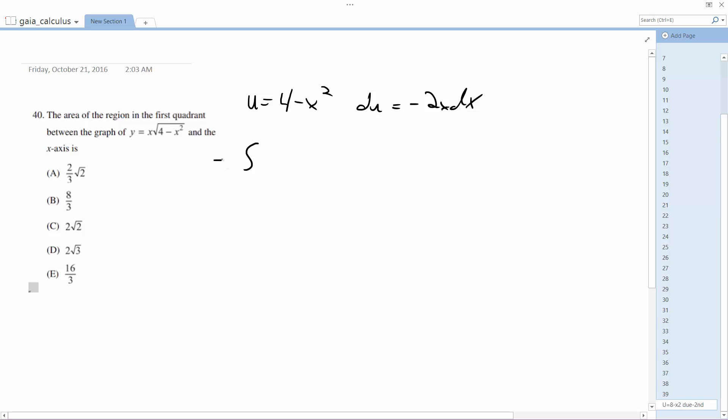Alright, so subbing, so negative 1 half from 4 to 0, square root of u, du. Actually, what am I doing? Okay, let's make this 1 half from 0 to 4, square root of u, du.